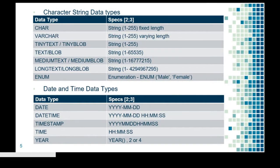Another type is character string data types. We have CHAR for string, which is fixed length; VARCHAR or varying character, which is varying length and also accepts string values; TINYTEXT, TINYBLOB, TEXT, and BLOB; MEDIUMTEXT, MEDIUMBLOB, LONGTEXT, and LONGBLOB. These are data types that receive string or character values and they just differ in sizes.